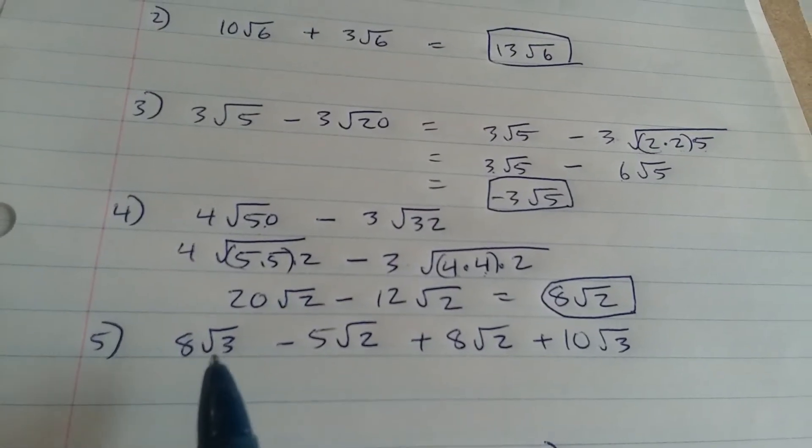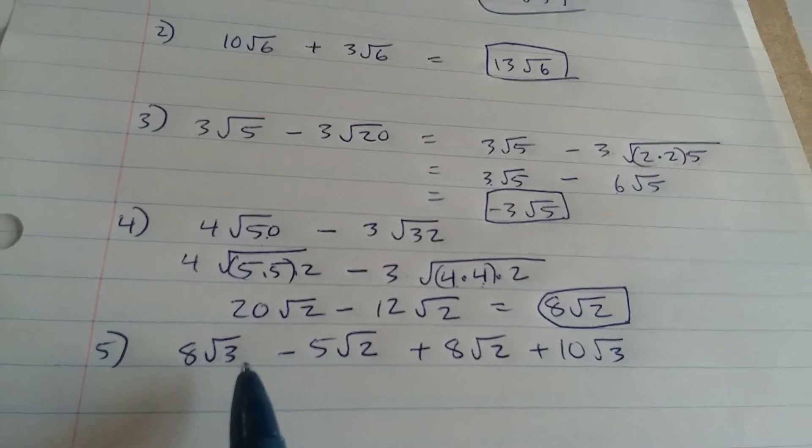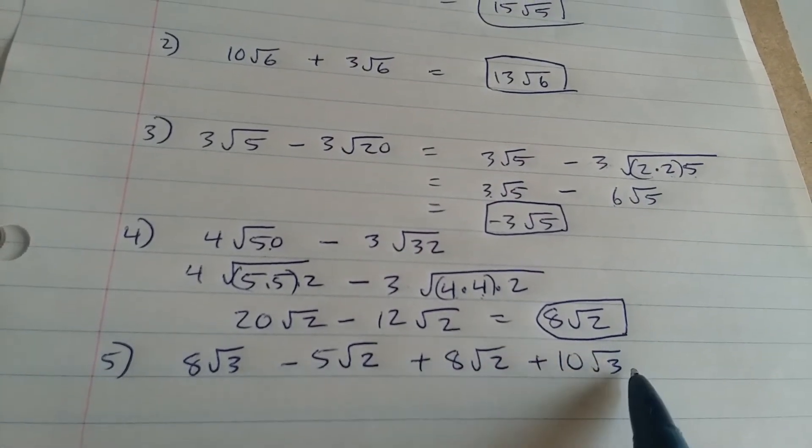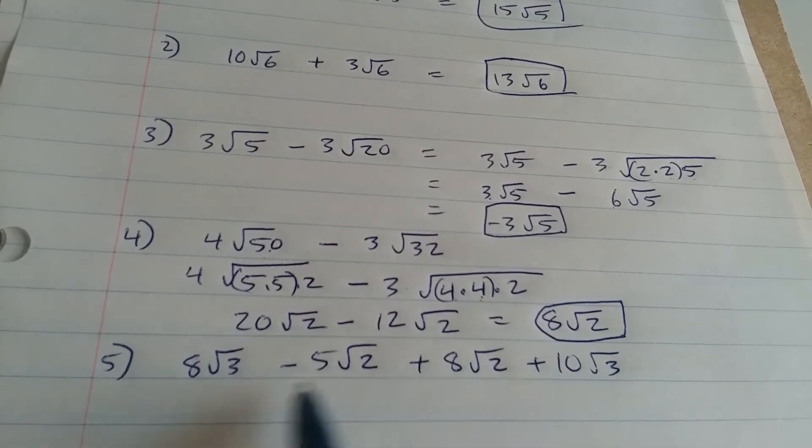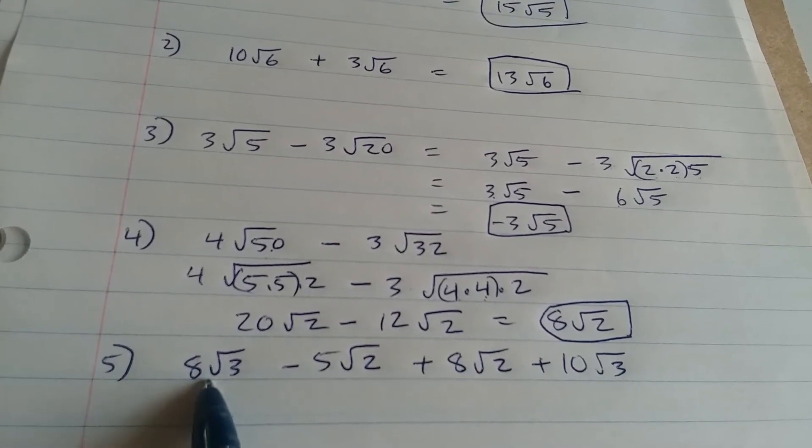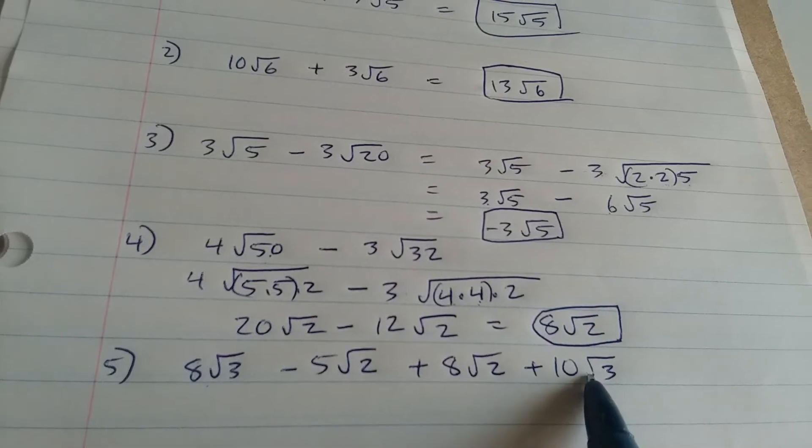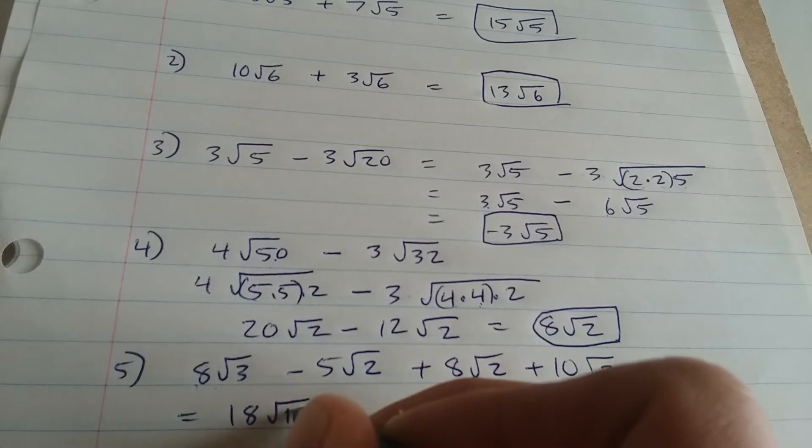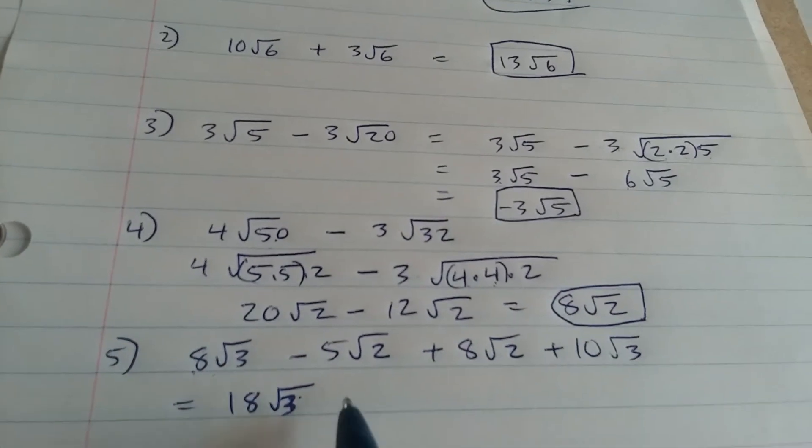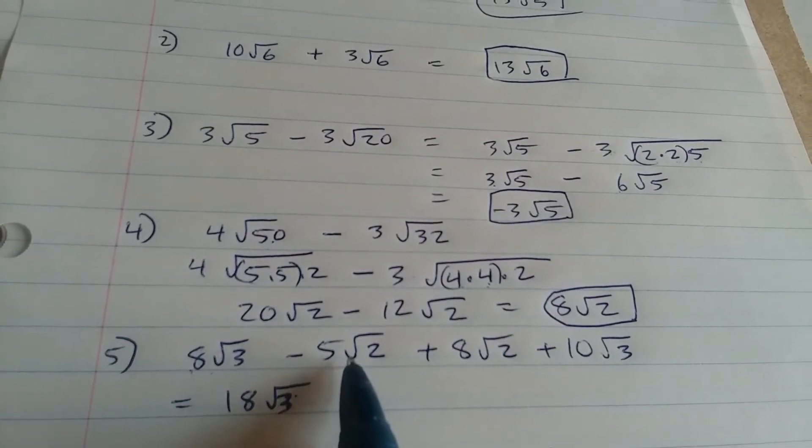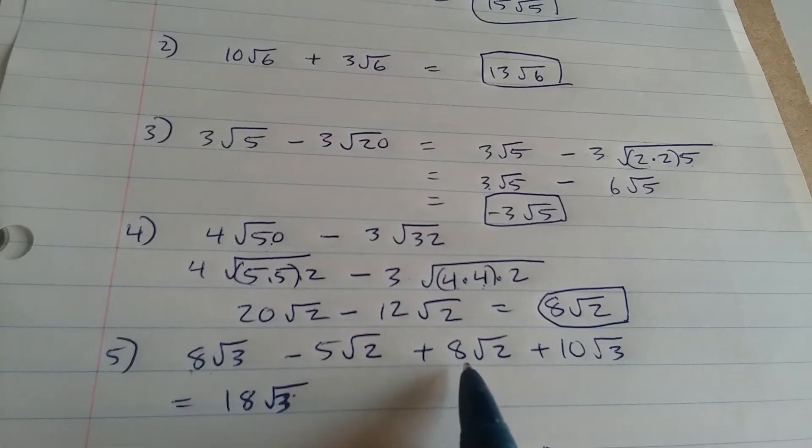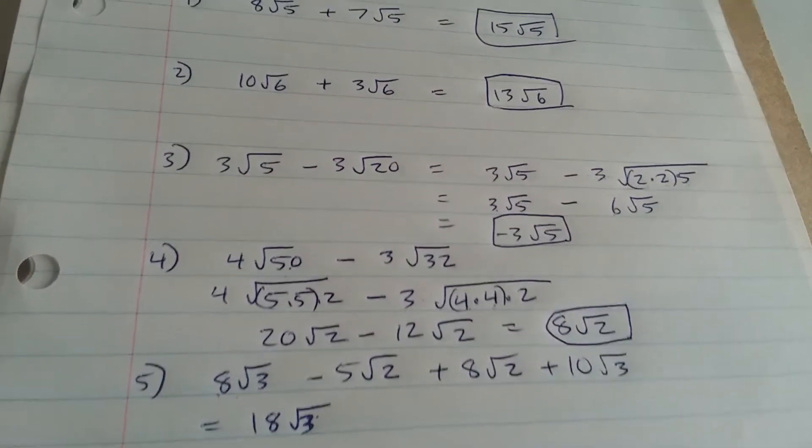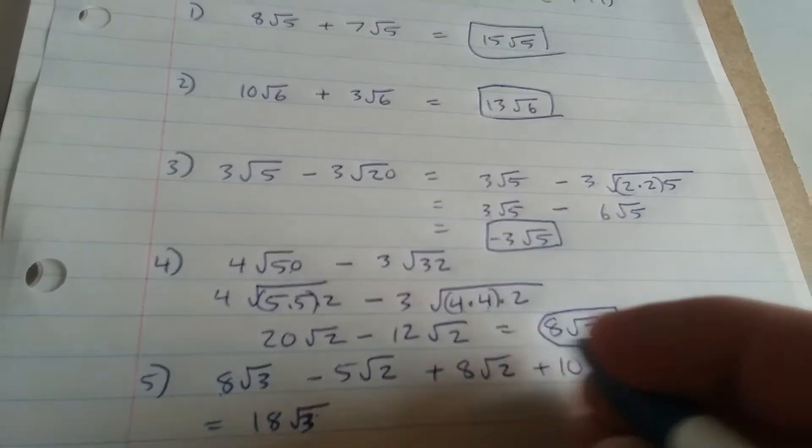Next example here. Notice we have 4 different terms. Notice that the square root of 3 and the square root of 3, there's 2 terms with the square root of 3. We can combine those. This is a positive 8 root 3. This is a positive 10 root 3. We can combine those to get 18 root 3. And then we have minus 5 root 2 plus 8 root 2. Negative 5 plus 8 is 3. So it's going to be plus 3 root 2.